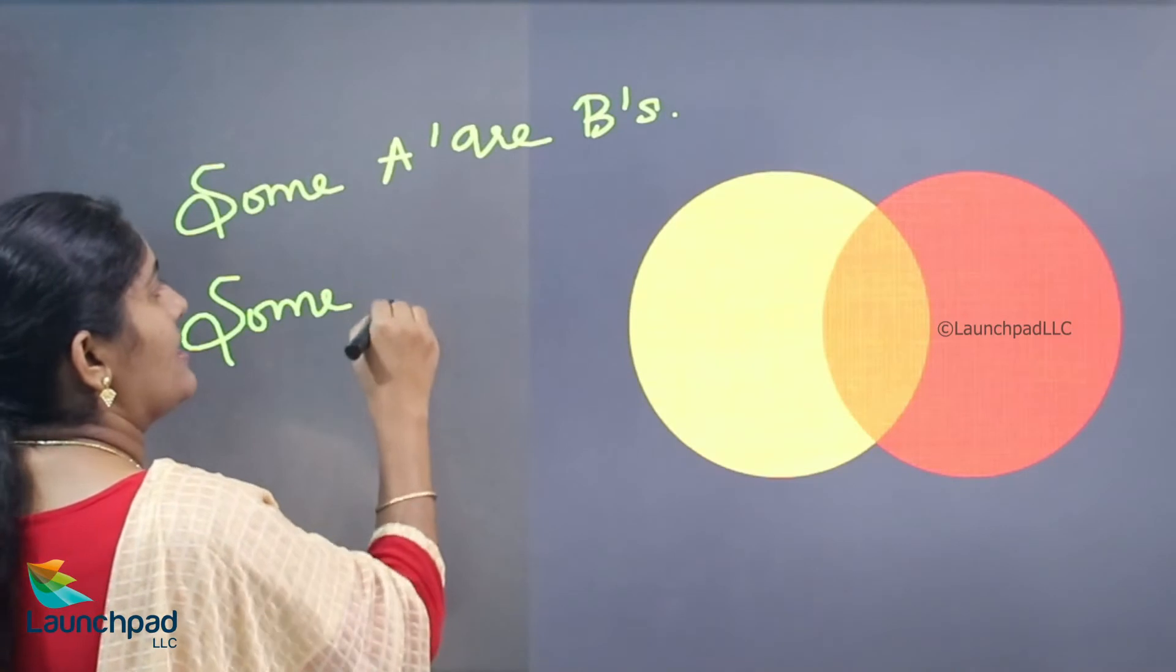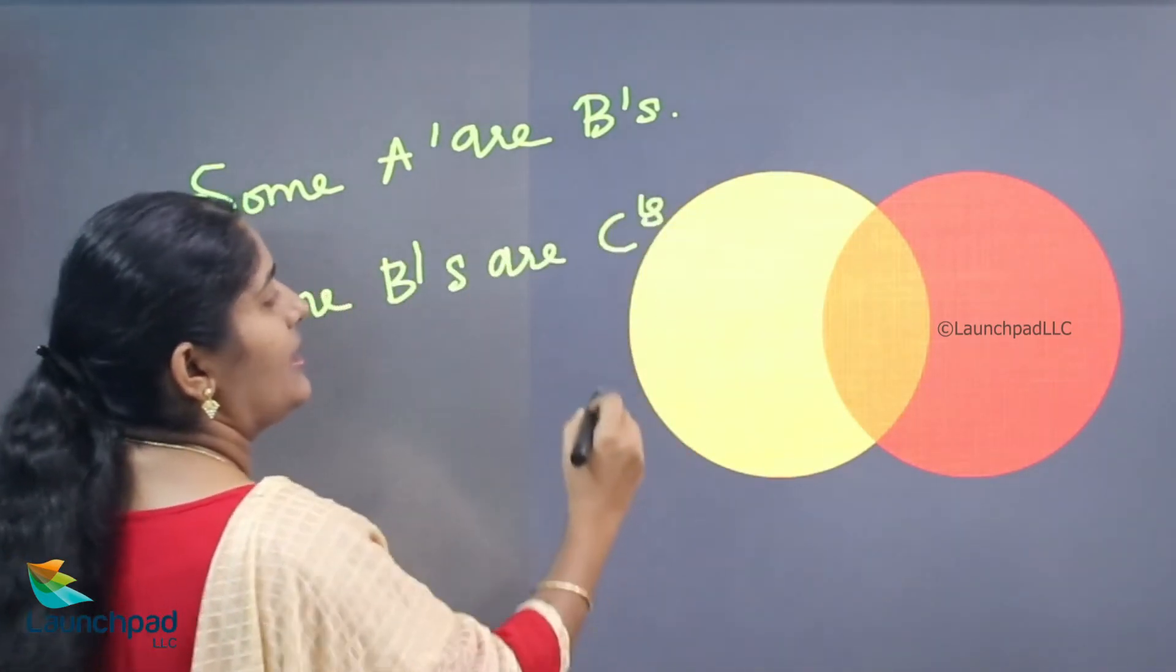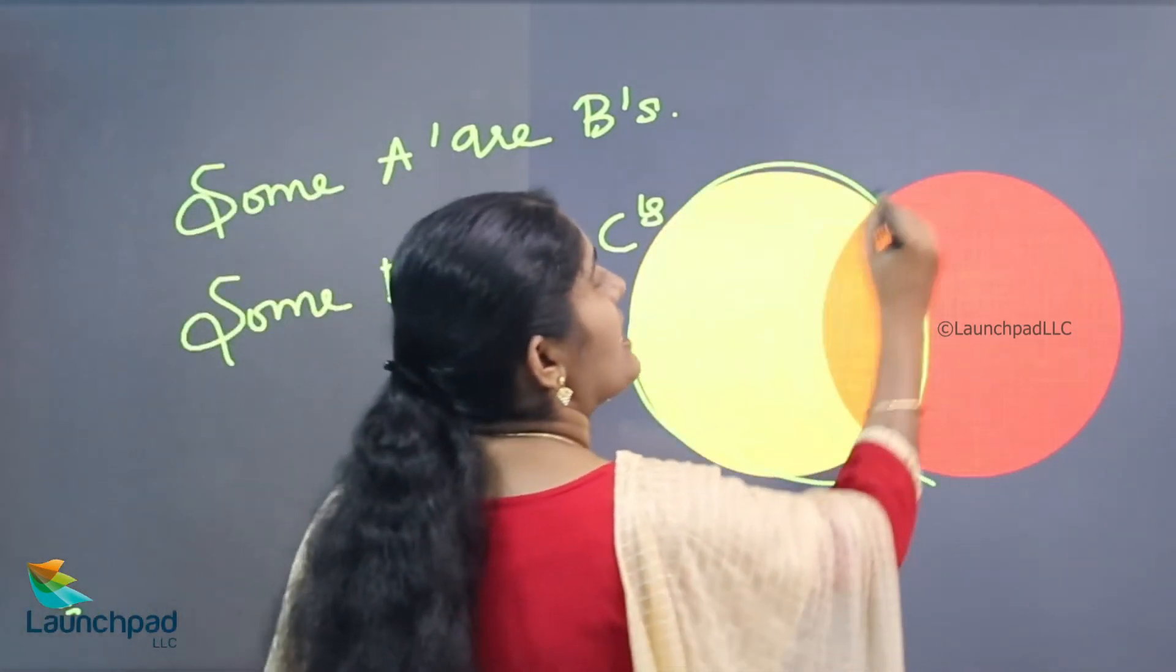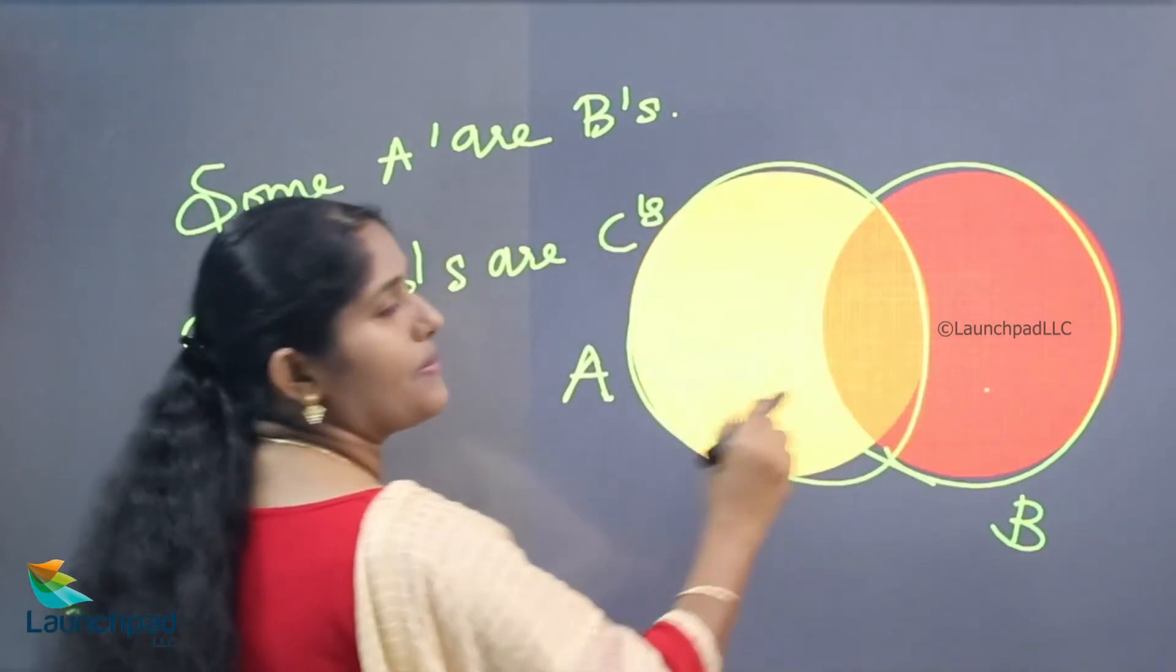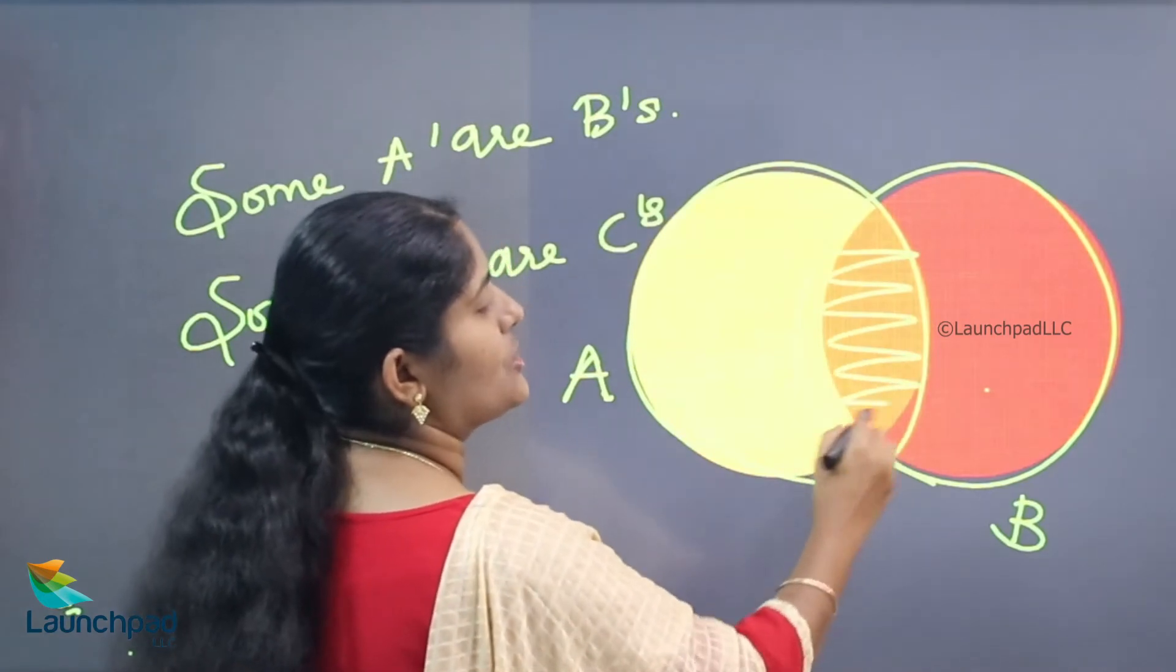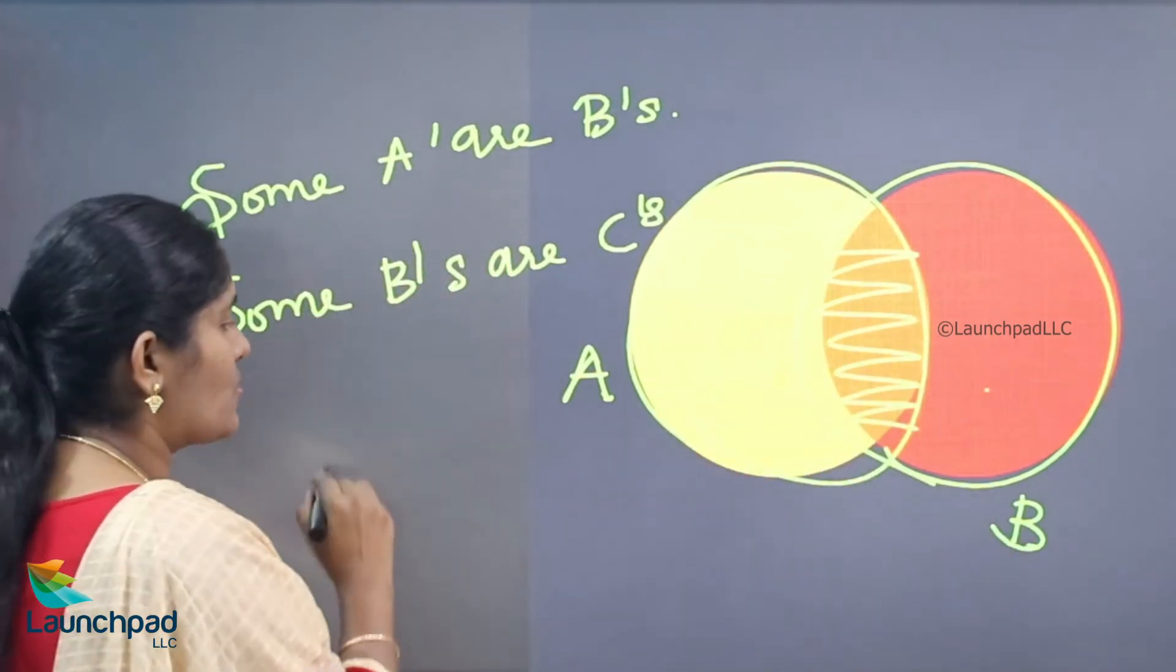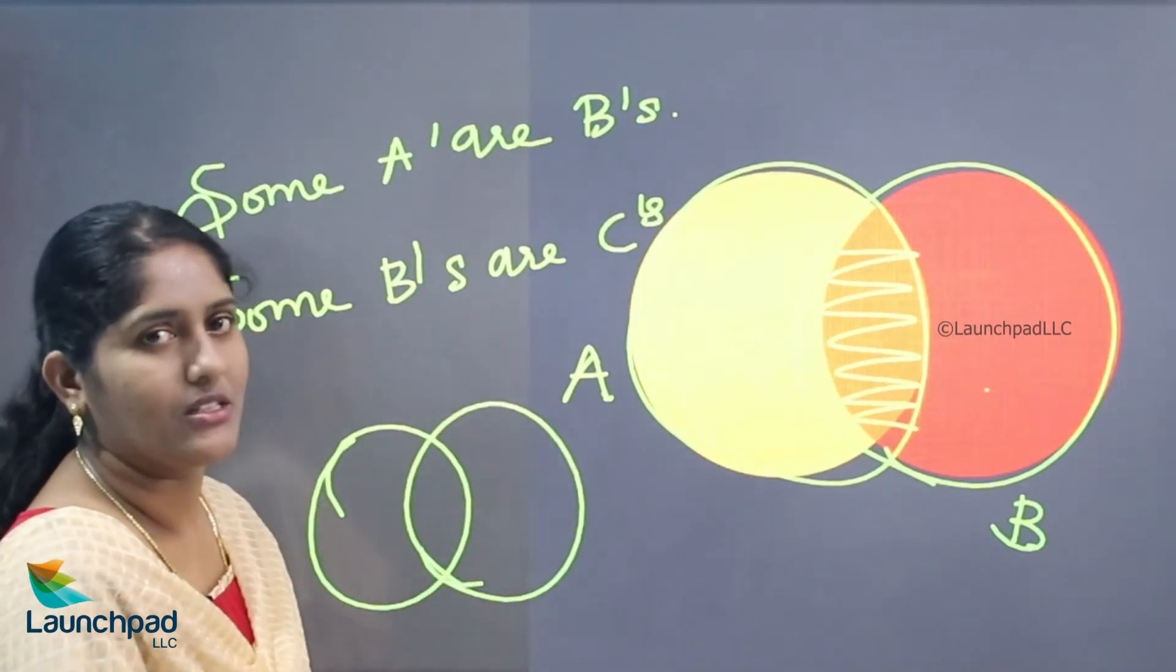Second statement: some B's are C's. Here this diagram is indicated A and this diagram is indicated B. Some A's are B, the intersection is denoted having the relationship between A and B. So some means we want to draw the diagram intersect diagram with the respective objects.